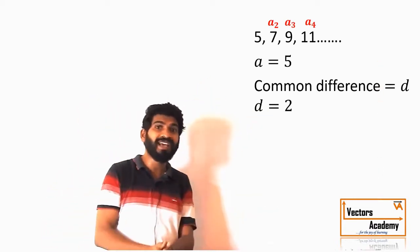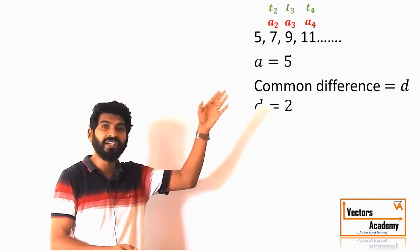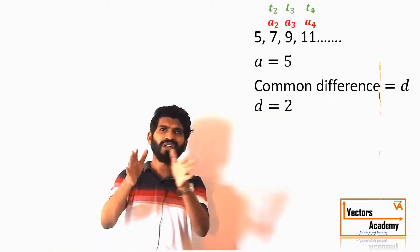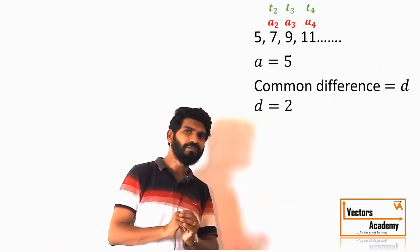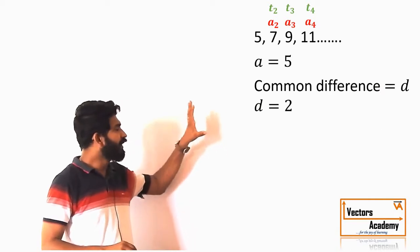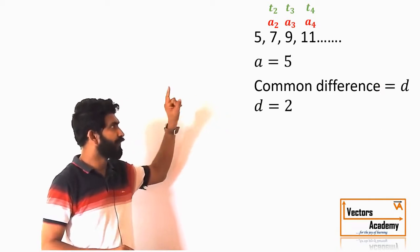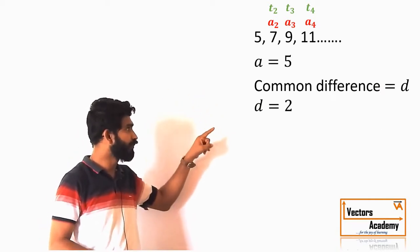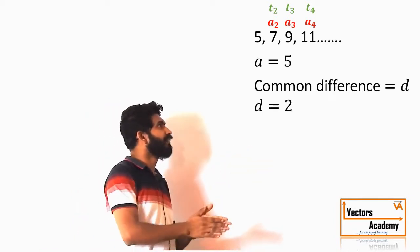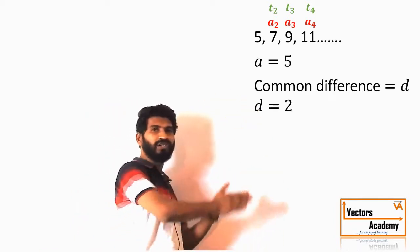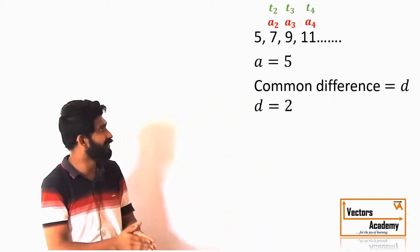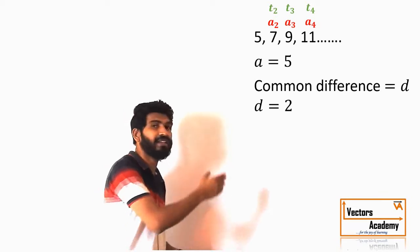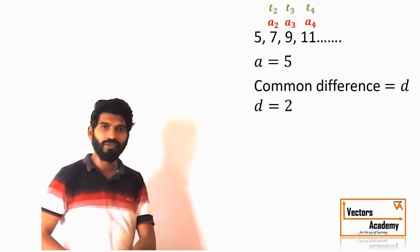In some other boards the terms can be represented by T1, T2, T3, T4 and so on — so don't get confused between the notations. In this sequence the value of a is 5, the value of d is 2, and we can see all the terms: a2 is 7, a3 is 9, and so on.